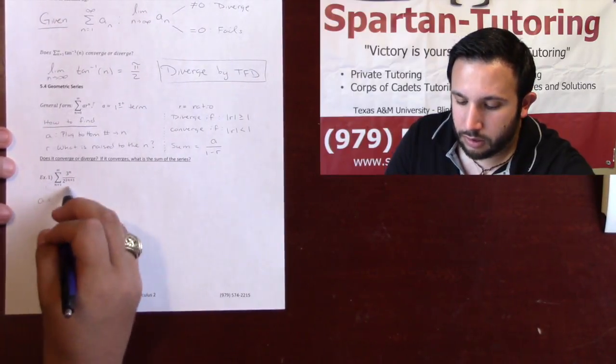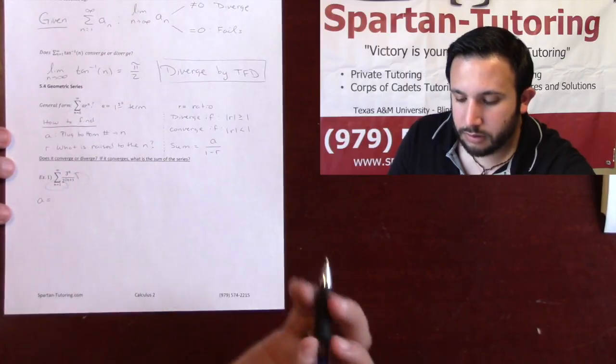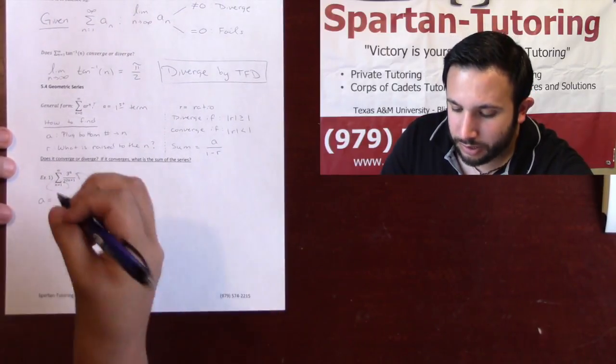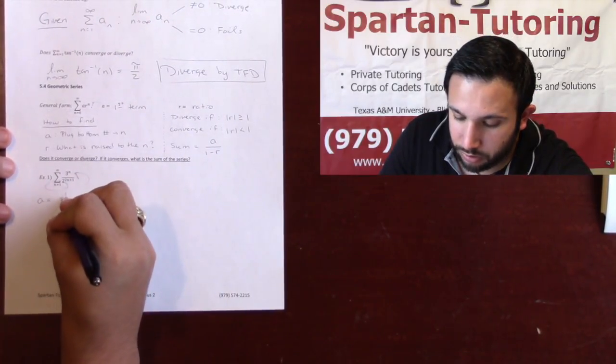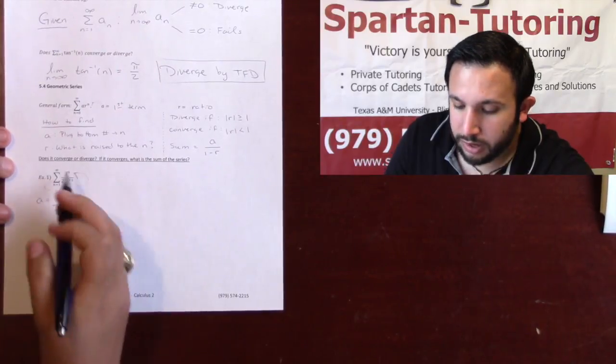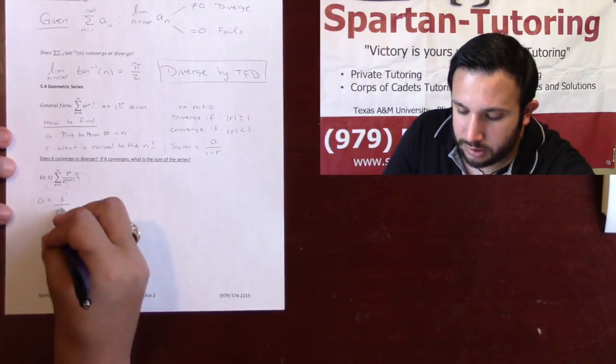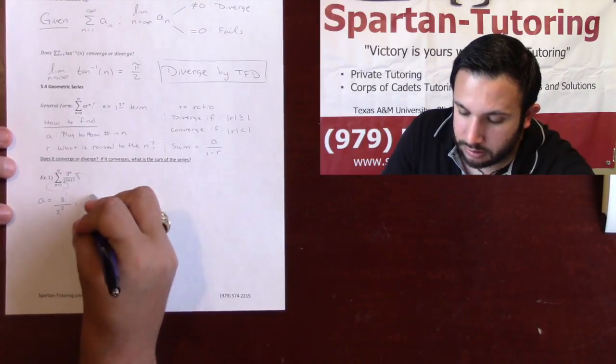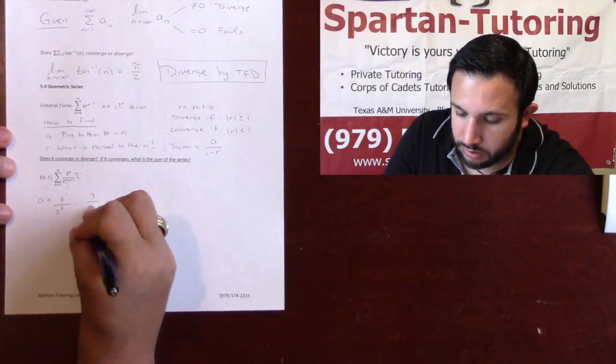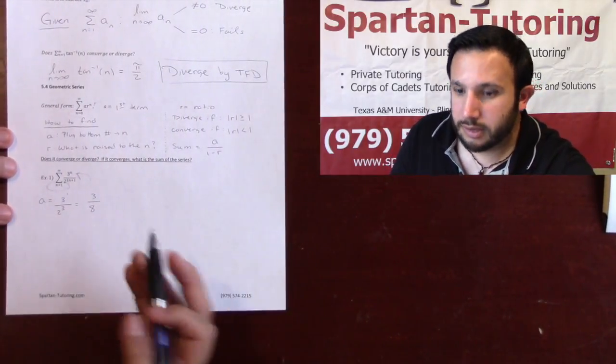a is what I get when I take this bottom number and plug it into n. So plugging 1 into n, I'm going to have a 3 to the 1 over 2 raised. When I plug a 1 into here, 2 plus 1 is going to be 3. So we're going to have 3 over 2 cubed, which is 8. So a is 3 eighths.